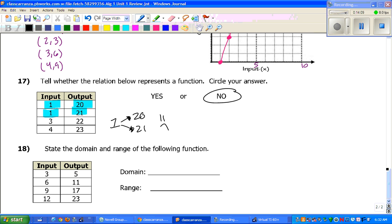And the last one, number 18, it says to state the domain and the range. The domain is your input, the range is your output. So, all you've got to do is write those numbers down. Put them inside the set. And that's it.